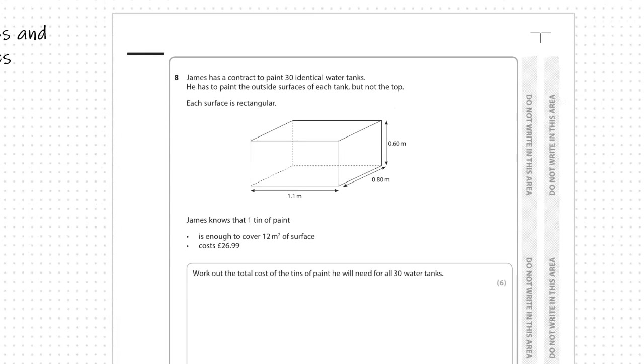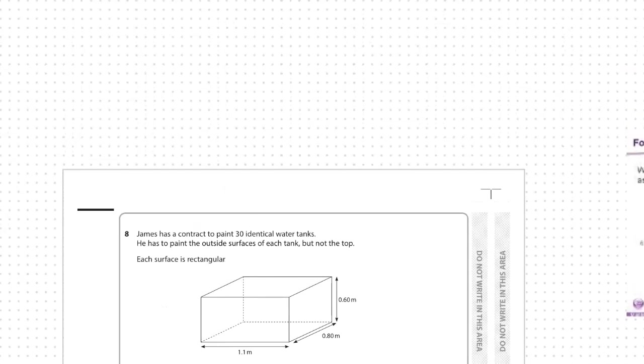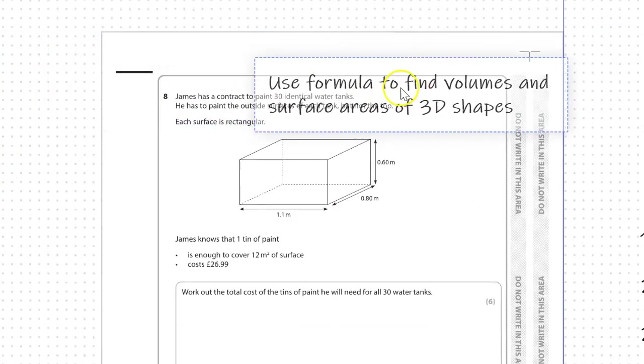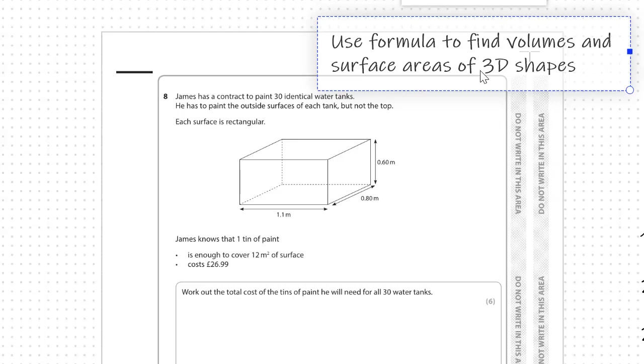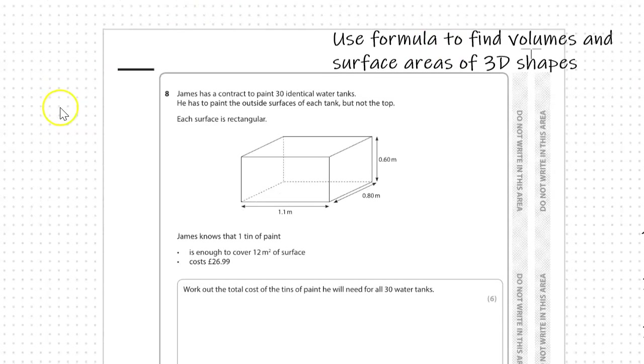To put this into context, the subject content and underlying skills is to use formulas to find volumes and surface areas of 3D shapes. It's really important to understand what the question is asking you. It's not a volume we're finding, we're finding the surface area because James is painting the outside. He is not working out the capacity inside, for that we would need the volume.